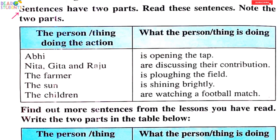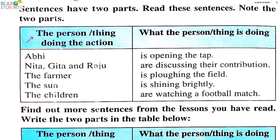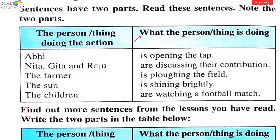Sentences have two parts. Read these sentences and note the two parts. This part is the subject — the person or thing being talked about. The other part tells what the person or thing is doing — that is the action.